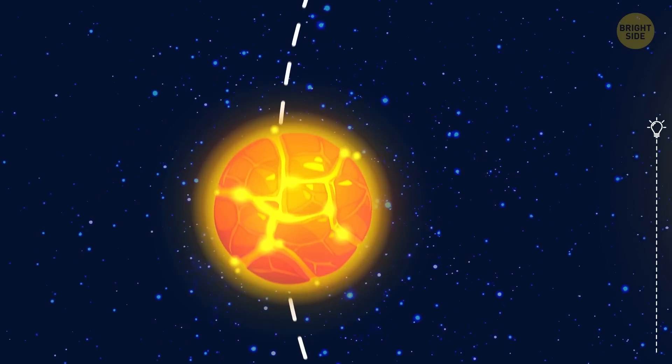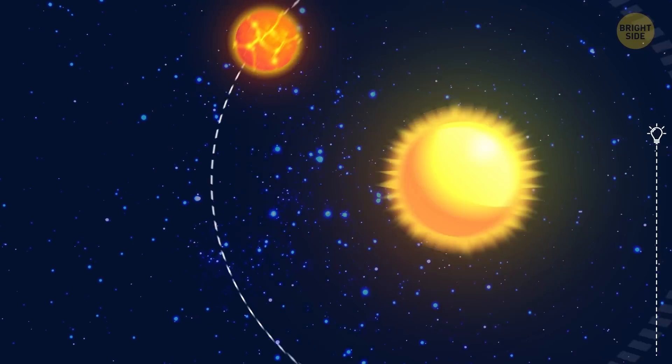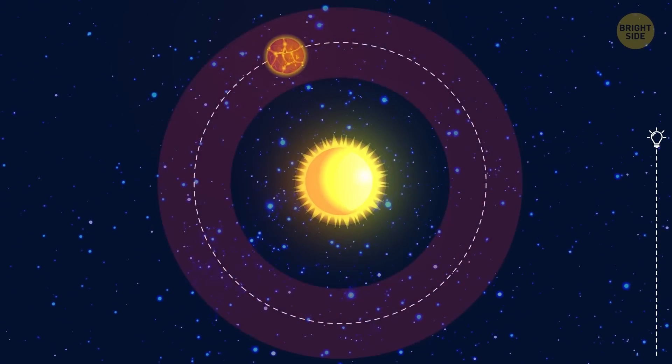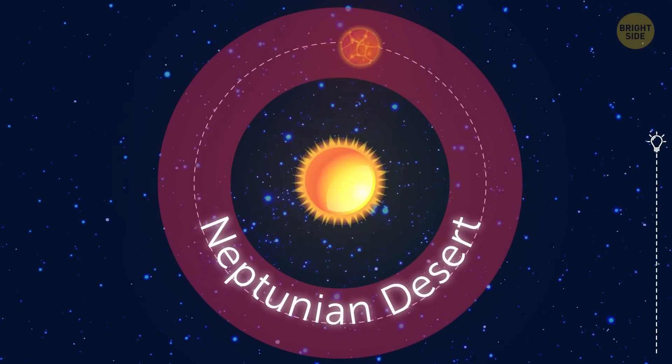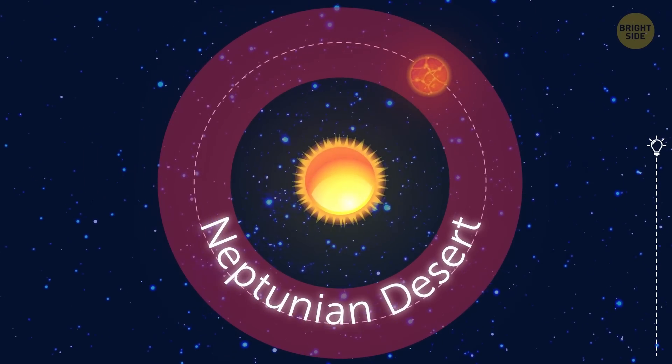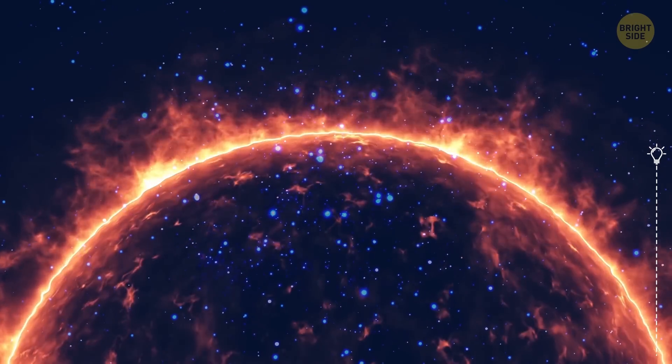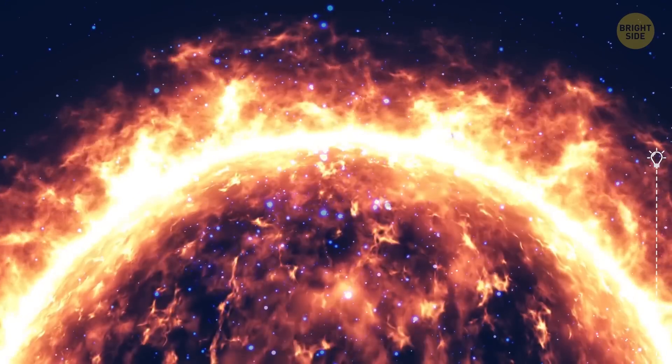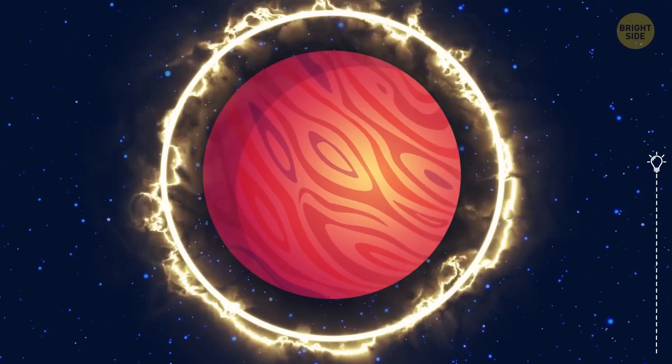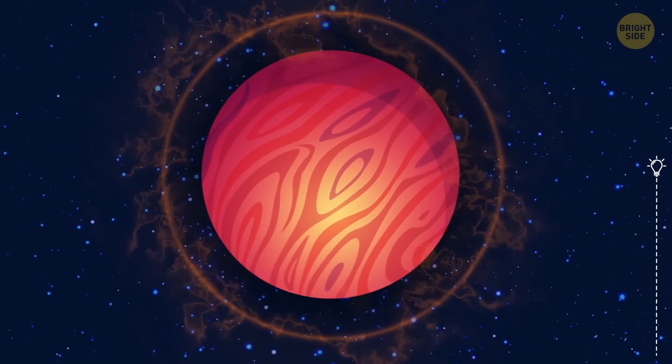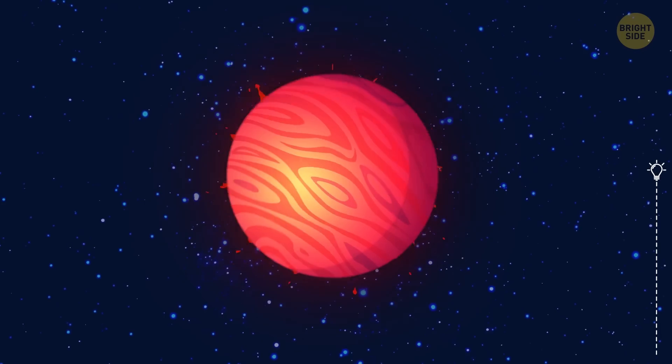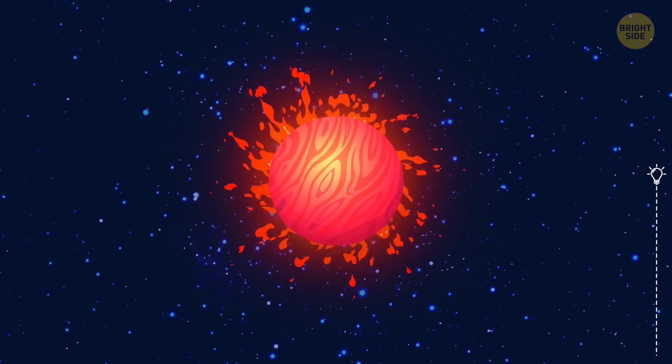NGTS-4b is, at least for now, the only sub-Neptune-sized planet that orbits its star in a so-called Neptunian desert. And it's called desert for a reason. The radiation coming from the stars in Neptunian deserts is pretty vicious. Normally, it would evaporate any kind of atmosphere from any planets in close proximity and leave them as small, blazing-hot rocks.